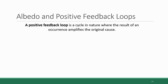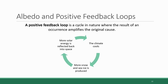This is significant because it embodies a phenomenon called a positive feedback loop — a cycle where the results of an occurrence amplify the original cause. In the case of ice and the albedo effect: when the Earth's climate becomes cooler, lower temperatures cause more snow and sea ice to be produced, giving the Earth a higher average albedo. More solar energy gets reflected back out into space, more energy is lost from the Earth's system, the climate gets even cooler, and the cycle continues.